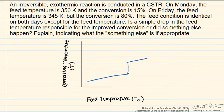We then have a hysteresis effect where if we decrease the feed temperature — say it went up and ignited, and then started coming back down — we would stay at the upper steady state for a while until we reached the extinction temperature, at which point we would come back down. So this would be our ignition temperature and this would be our extinction temperature.